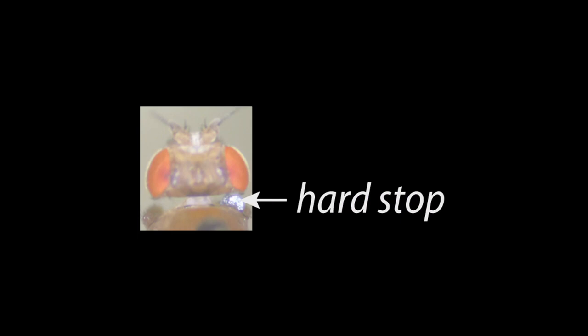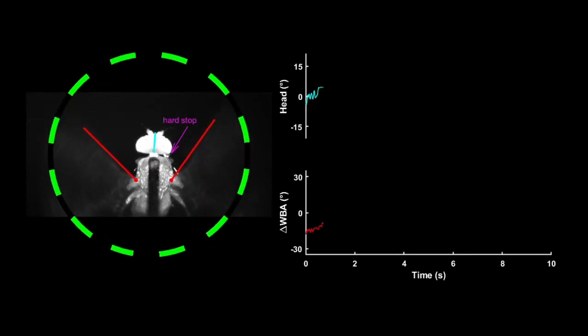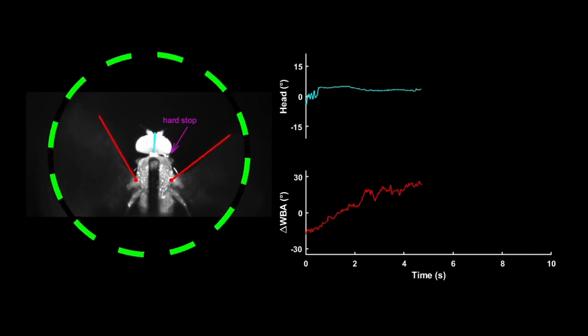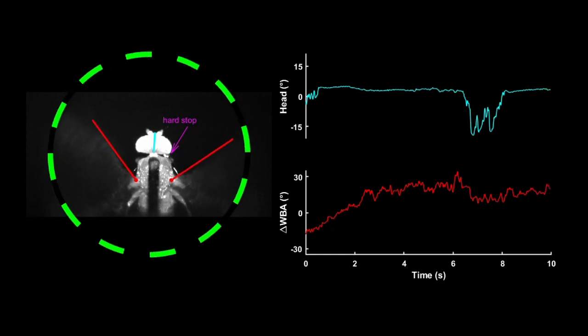To provide further evidence for the proprioceptive based saccade trigger, we glued a small iron filing to one side of the fly's neck. Then we measured the head reset saccade rate in these head constrained flies and their head free counterparts. Again, we found that the head reset saccade rate was significantly reduced in flies with their head constrained. This strongly suggests that head reset saccades are triggered primarily by proprioceptive feedback from the neck sensory system.